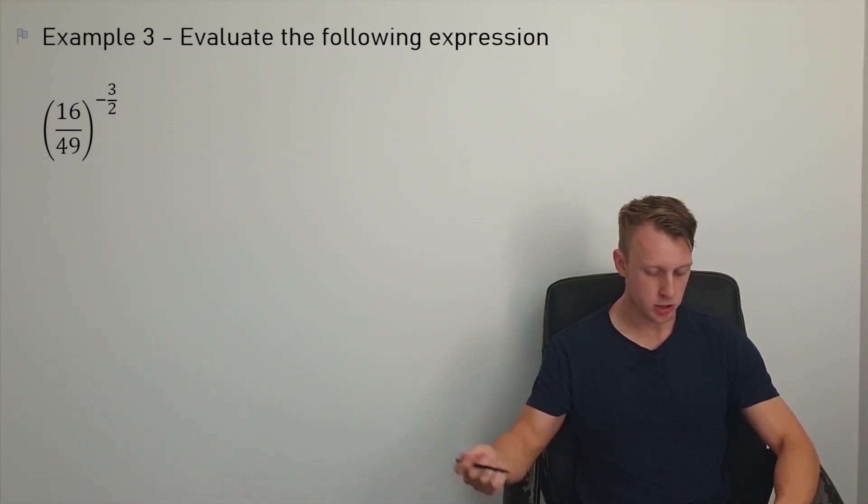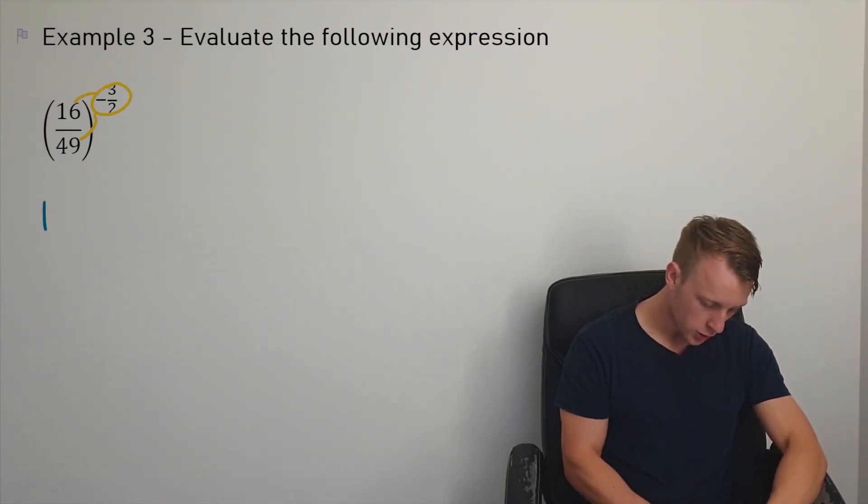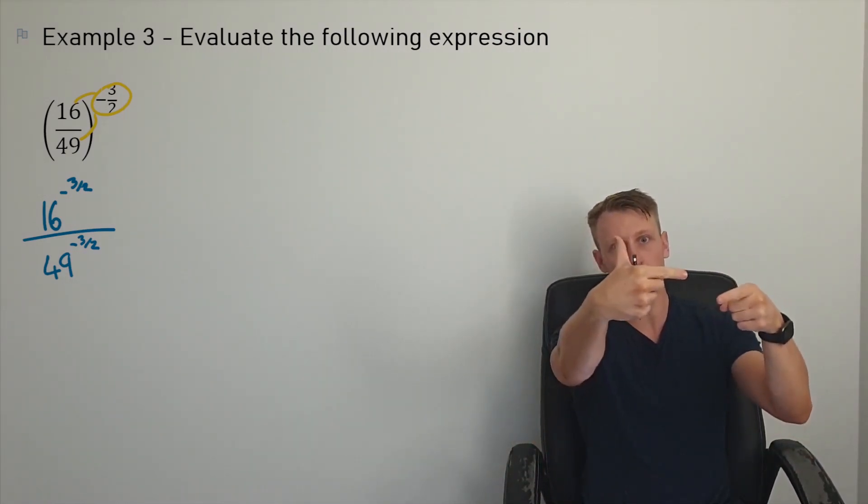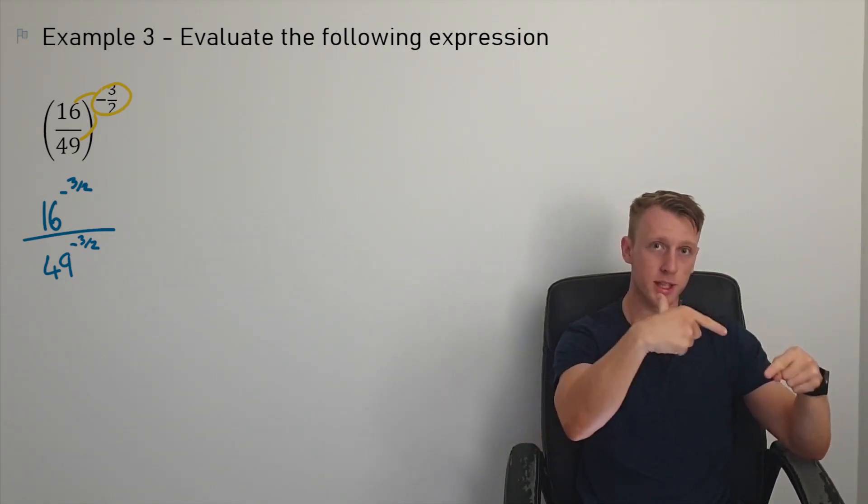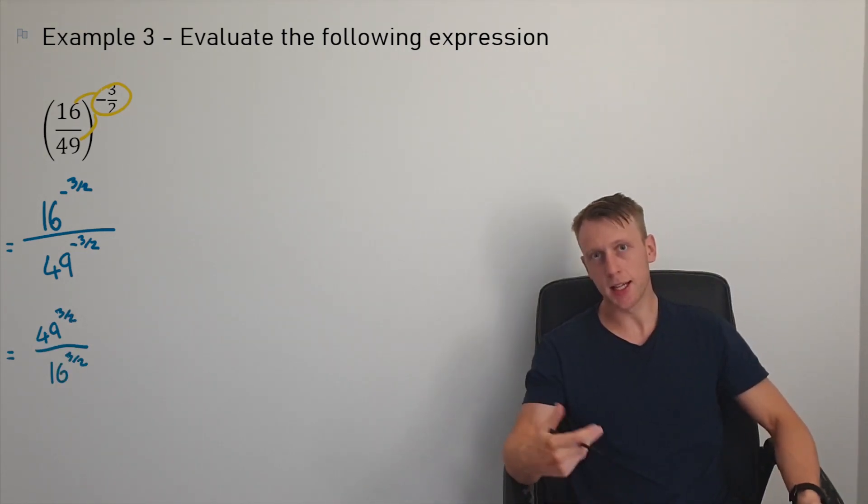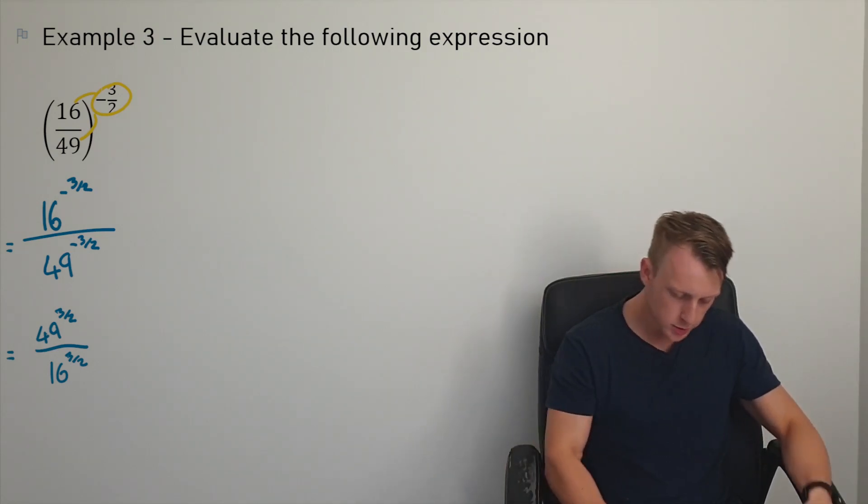And then so here we've got an expression to evaluate. All right, I'm just going to more or less take this power and hit it to both the numerator and the denominator. So I've got 16 to the power of negative 3/2 over 49 to the power of negative 3/2. Now, since the numerator and the denominator have both got negative powers, you want to put the numerator term on the denominator and the denominator term on the numerator to make them both positive. So we're going to go ahead and do that.